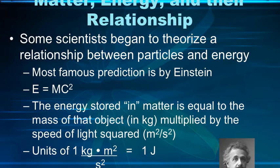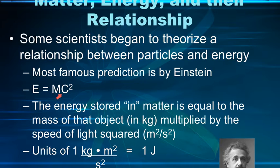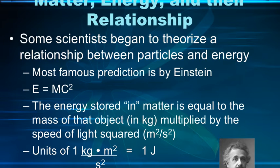In the 1900s, scientists started theorizing about the relationship between particles and energy. As we began understanding what protons, neutrons, and electrons are, scientists questioned the relationship between them. This might be an equation you've seen before — maybe the most famous equation when it comes to matter and energy. It comes from Albert Einstein: E equals mc squared.